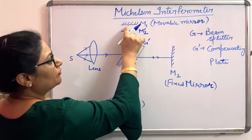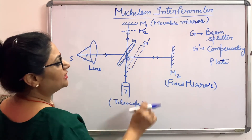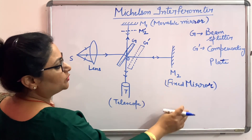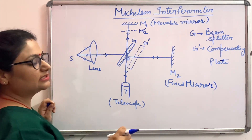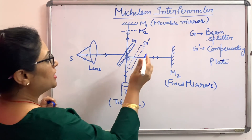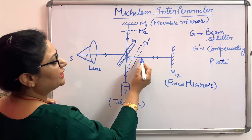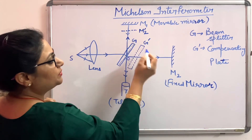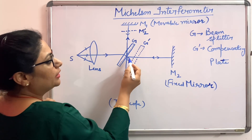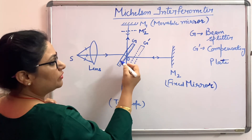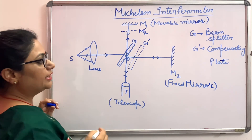The reflected beam will move towards mirror M1 and the transmitted beam will move towards mirror M2. Mirror M2 is a fixed mirror while mirror M1 is a movable mirror. The light incident on these two mirrors is reflected back from M1 and M2, meets at point O to interfere, and the interference pattern is observed through the telescope.